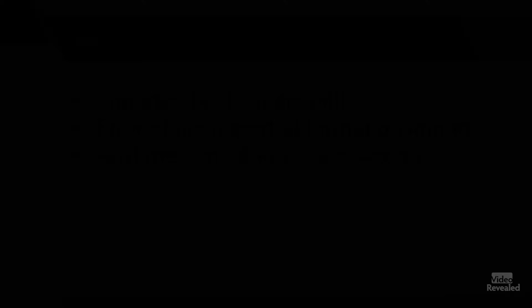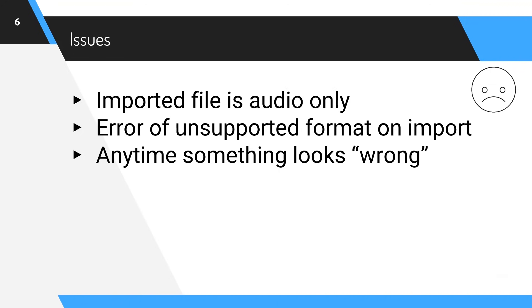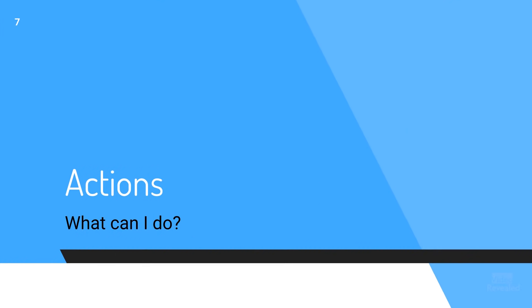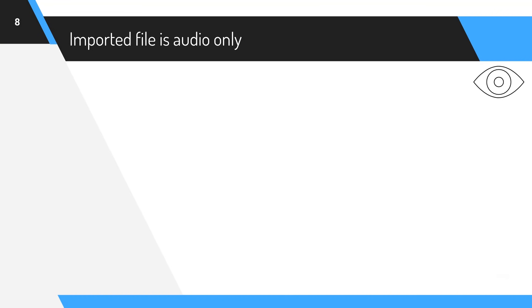Let's look at the issues. First of all, an imported file is audio only, or you get an error of unsupported format, or anytime something looks wrong. This happens when the audio codec is supported but the video codec isn't. To make this even more complicated, one file actually has to have two different codecs. The video codec has nothing to do with the audio codec. So when Premiere Pro imports the file, it decides it can support the audio and bring that in, but it can't support the video.